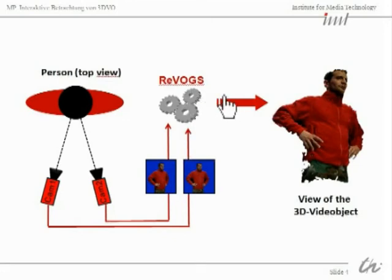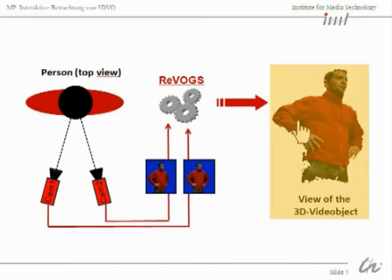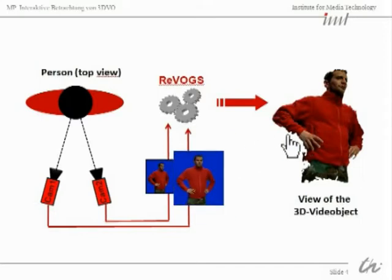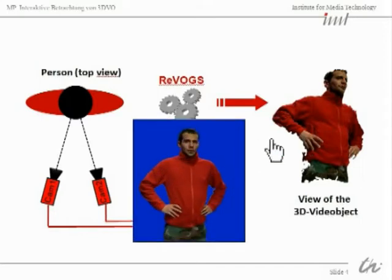Revox is a shortcut for Realistic Video Object Generation System. This system is able to compute a different point of view apart from the view of the two real cameras. If you compare these both views, you can see that the point of view has changed.